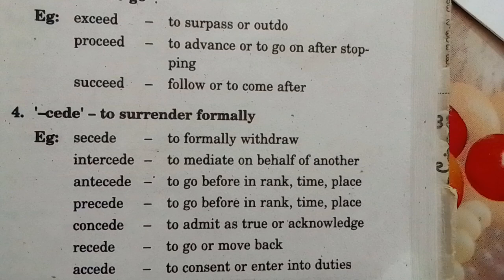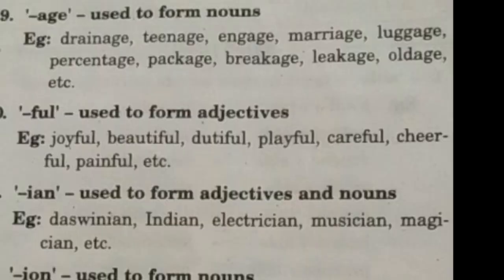Let us look at some other commonly used suffixes. '-age' is used to form nouns — for example, teenage, marriage, percentage, package, breakage, leakage. '-ion' is used to form nouns — for example, suggestion, collection, production, election, selection, correction. '-ful' is used to form adjectives — for example, joyful, beautiful, dutiful, playful, careful, cheerful, painful. '-ian' is used to form adjectives and nouns — for example, Indian, electrician, musician, magician.